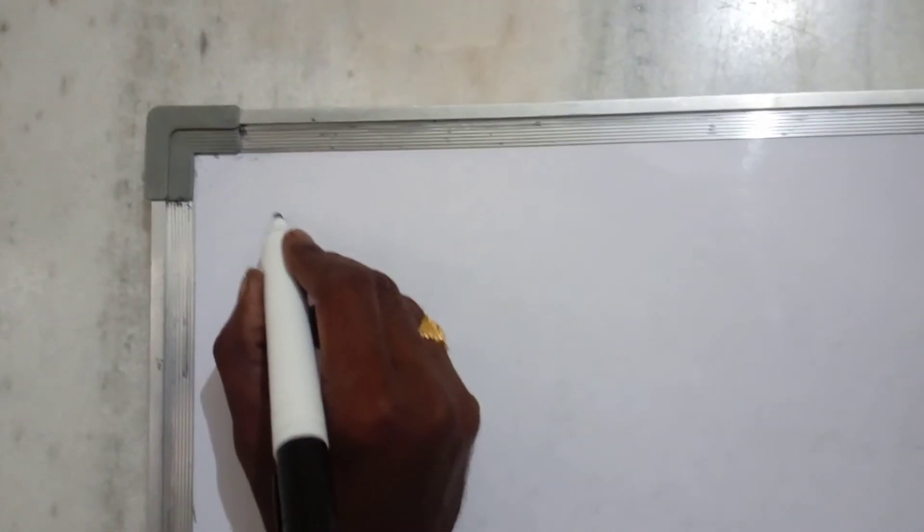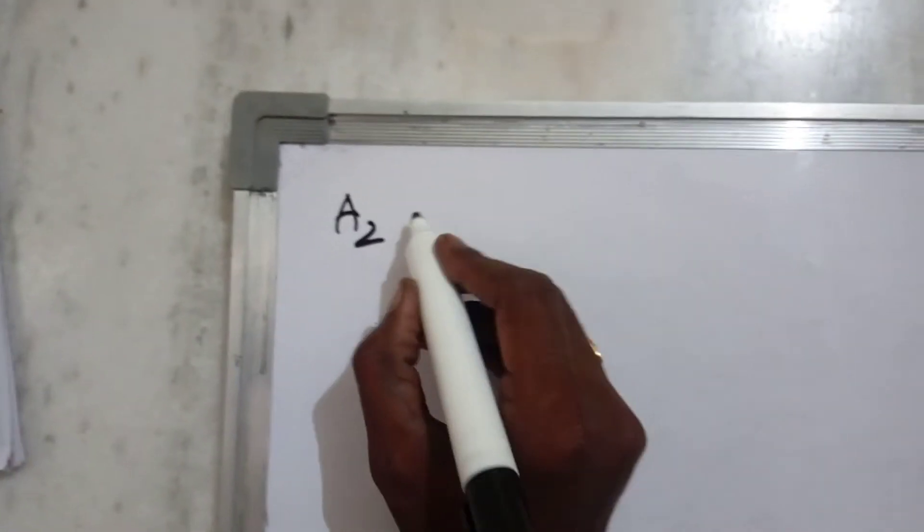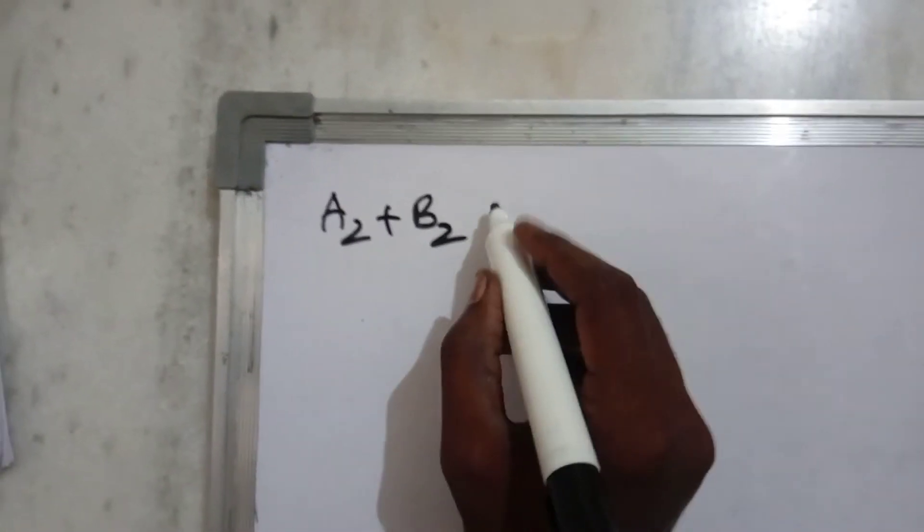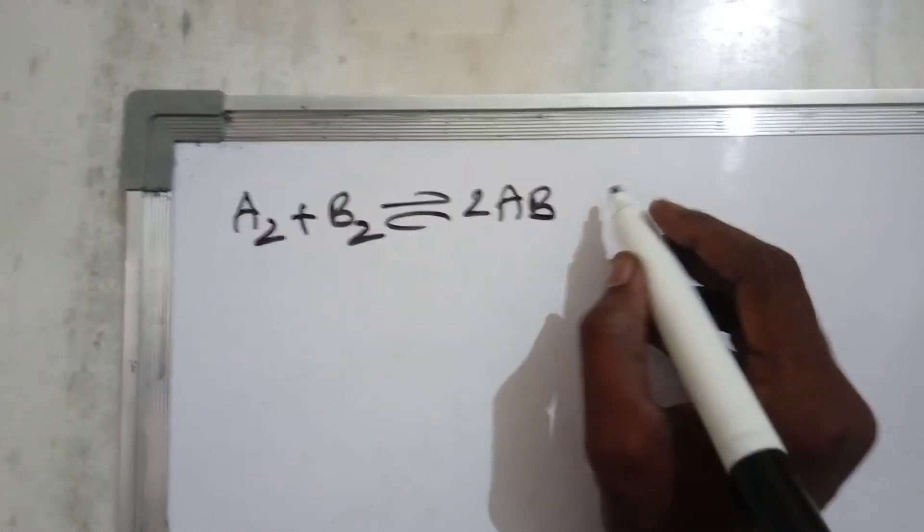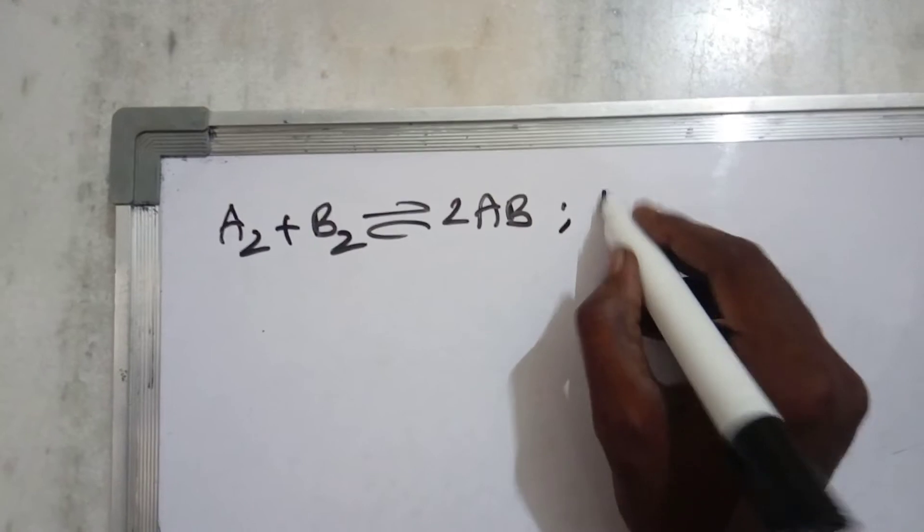Let me tell you the reactions. A2 plus B2 equilibrium with 2AB. So here is K1 value.